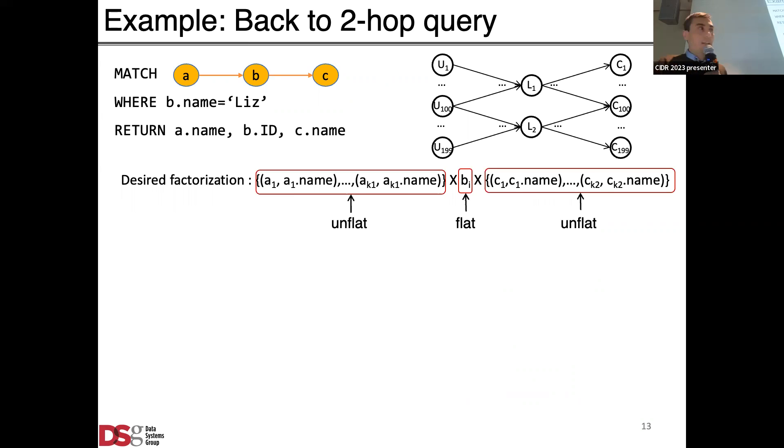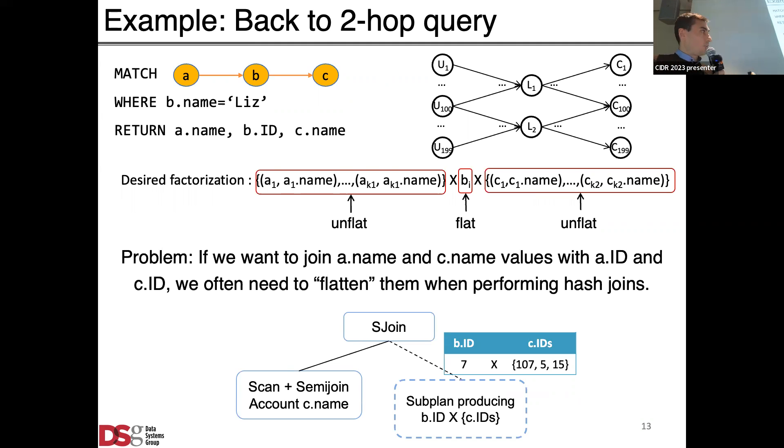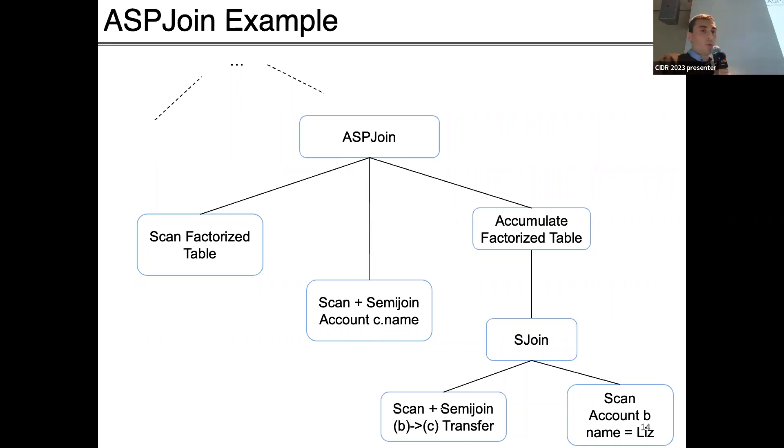Let me demonstrate this problem. This is why we designed the second modified hash join operator. In our previous example, back to the two-hop query, our desired factorization structure was this: we wanted to keep the b's flat, they need to be flat so we can factor out a's and c's. We wanted to keep a's and c's unflat. But the problem is if you had only the S-join operator that passes information from build side to the probe side, suppose there was a sub plan producing b.ID with a set of factorized c.IDs and you wanted to join those c.IDs with c.name. Because we need to flatten the c.IDs, because at this point we can pass the information and know exactly which c.names are needed (107, 5, and 15), but because we also need to perform a join on those we need to create a hash table out of those, which means we need to flatten them, which means we kind of lose our factorization structure.